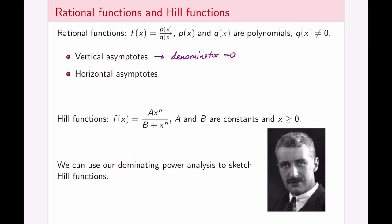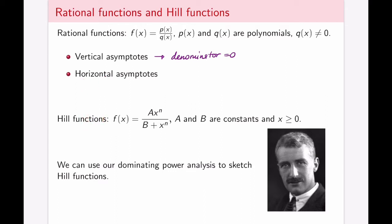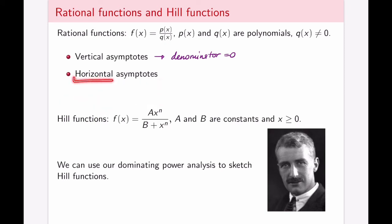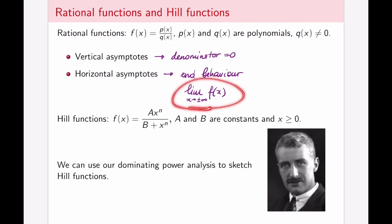Horizontal asymptotes are going to have to be calculated slightly differently. For vertical asymptotes, as the function approaches the asymptote, it goes off to either positive or negative infinity. Whereas for horizontal asymptotes, it's the value that the function approaches as the x values become larger and larger in either direction. So for horizontal asymptotes, we look at the end behavior and take the limit as x goes to positive or negative infinity. If this limit comes out to be a number, the horizontal asymptote exists. If it comes out to be infinity, there is no horizontal asymptote.